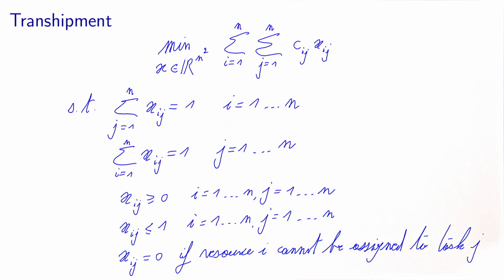This is the assignment problem written as a transshipment problem. It can be seen as a transportation problem where each supplier sends one unit of flow and each customer receives one unit of flow. As with the transportation problem, there is no real underlying network structure, so we model a conceptual network to write it as a transshipment problem. It inherits the properties of the transshipment problem, including the fact that the optimal solution will be integral — and here, integrality means zero or one, the two possible values that the flow can take.